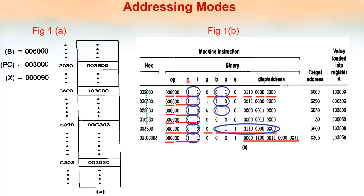From seeing the NIXBPE bits: N equal to 1 and I equal to 1 means it is neither immediate nor indirect addressing. X equal to 0, so it is not indexed mode. B equal to 0, so it is not base relative. P equal to 1 means it is program counter relative.